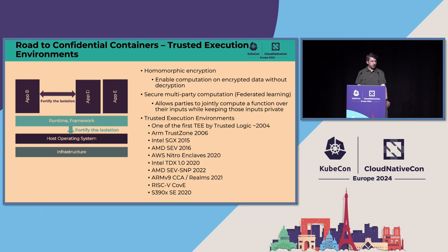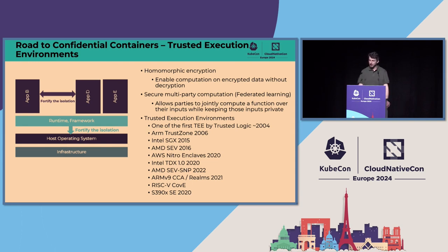Trusted execution environments are nothing completely new. Already in 2004 we had the first ones. All major CPU vendors have trusted execution environments now. If you have a mobile phone, you're running a trusted execution environment for vPay, Apple Pay, or Google Pay — they're all running in some security enclaves. All major architectures are providing trusted execution environments.